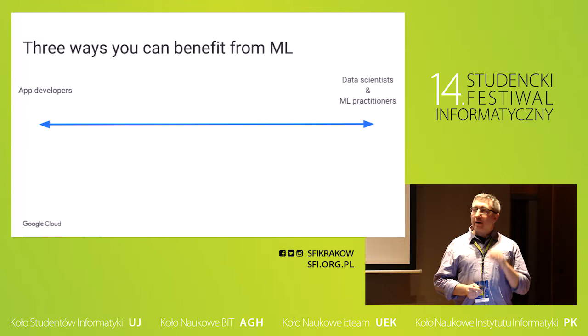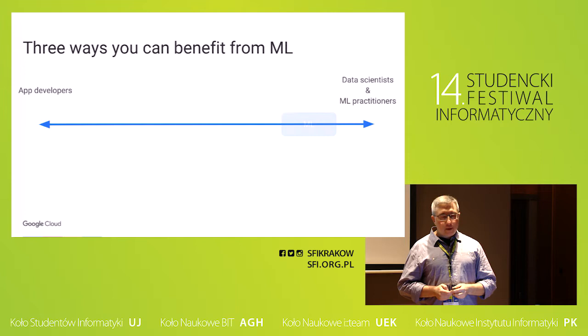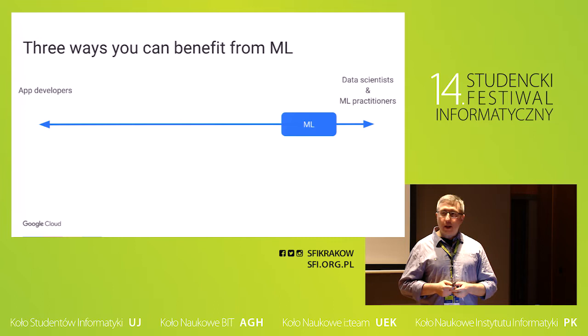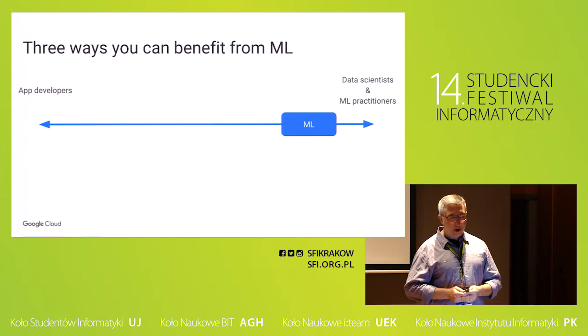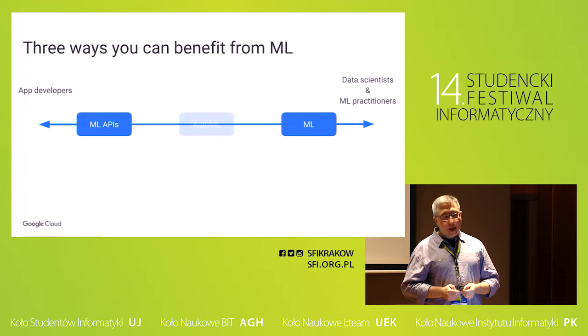Let's get into the details of machine learning. There are, as of today, three ways you can benefit from machine learning as a developer or as a student. It started with data scientists doing hardcore machine learning — you have to study neural networks, maybe statistics, understand deeply how to deal with big amounts of data and the mathematics behind, because you are handling matrices. The second way, possible for a few years now, is for app developers to use machine learning APIs.